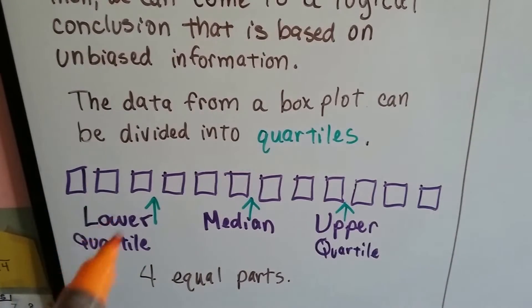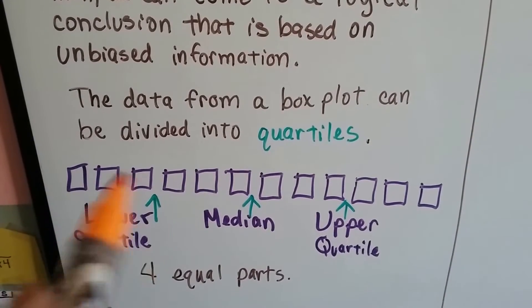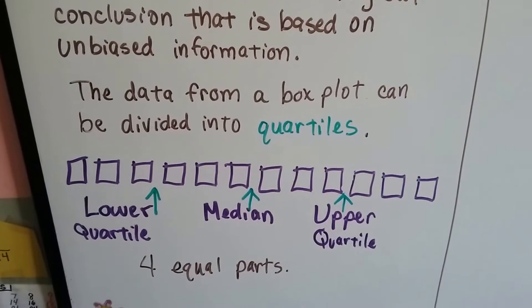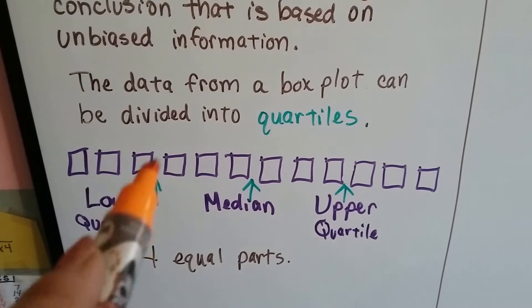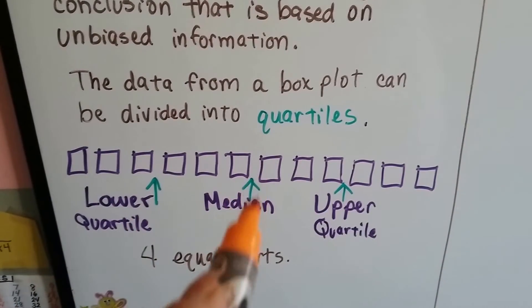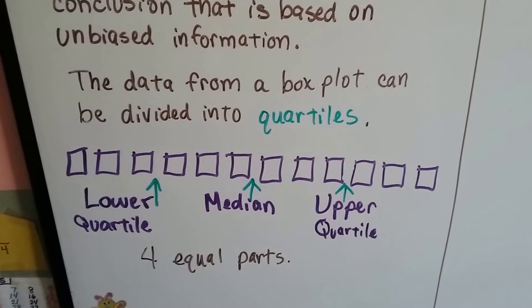If we had 24, we could split them into groups of 6. As long as we split them into groups of 4. So that's the lower quartile cutoff point, this is the median, and that's the upper quartile.